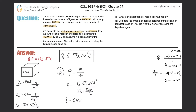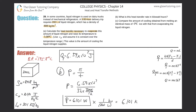They want kilowatts, not watts, so we divide by 1000. This gives us 6.101 kilowatts.